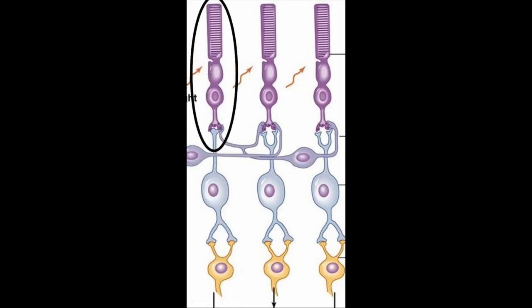Photoreceptor cells, like rods in this example, are continuously firing in the absence of stimuli. When they receive light, they stop firing.